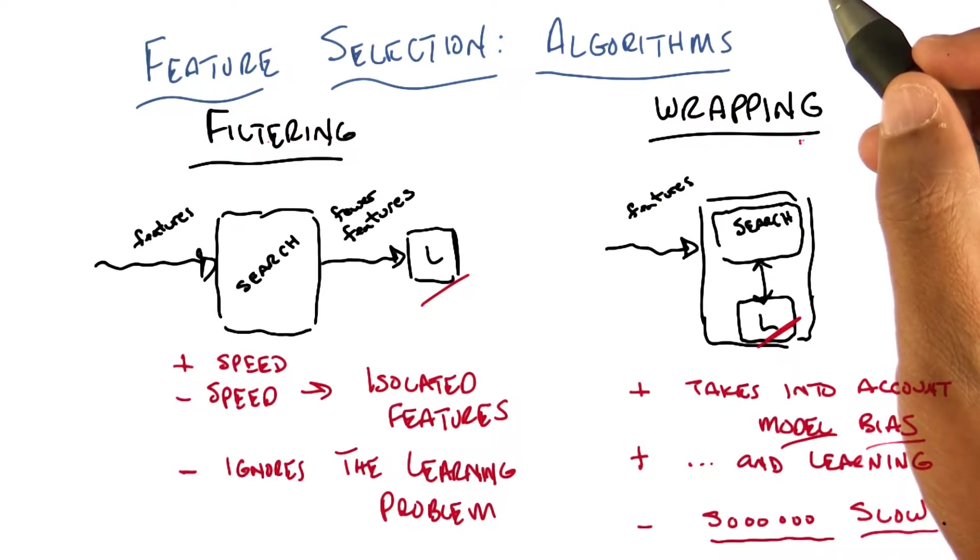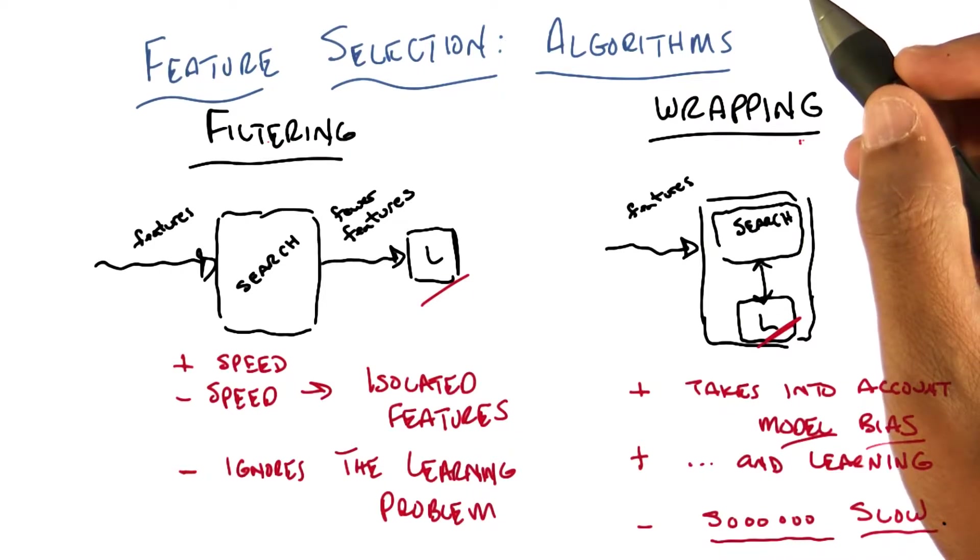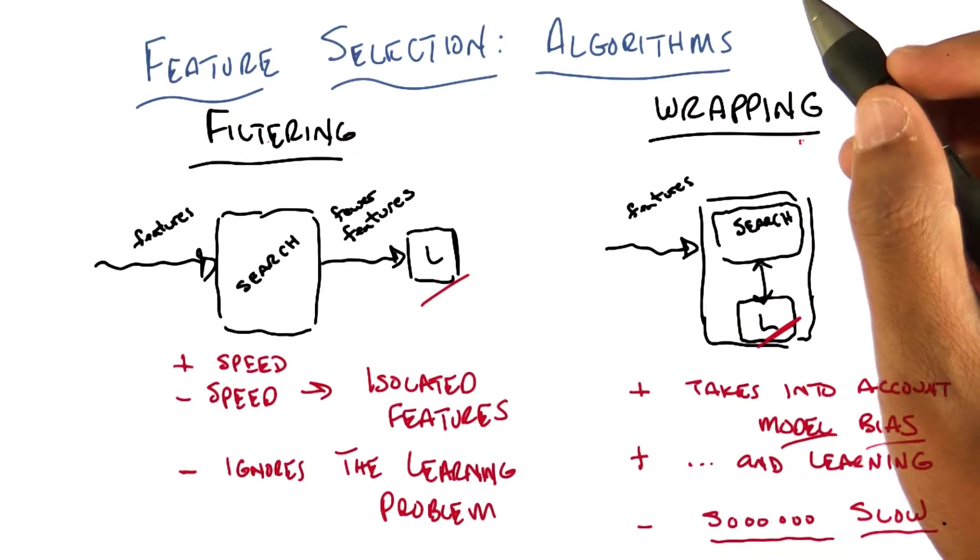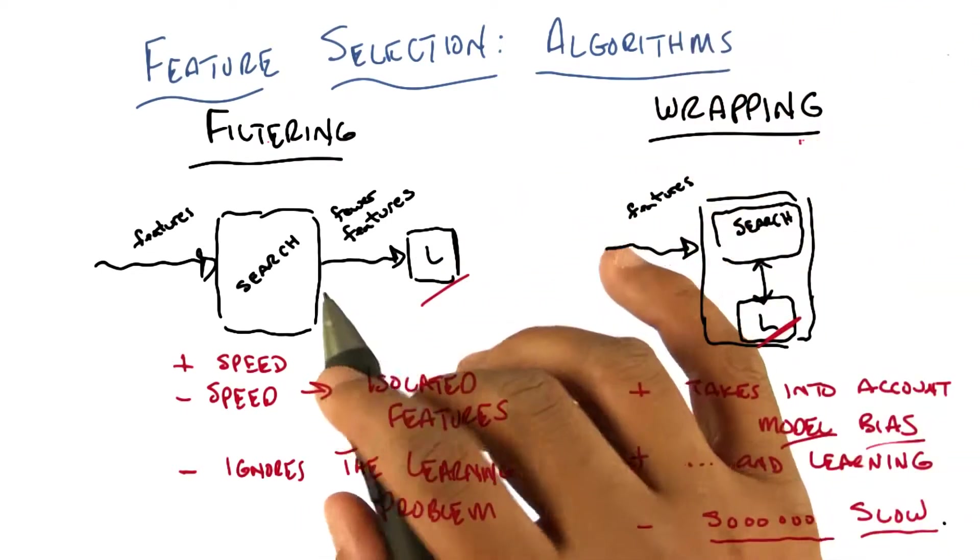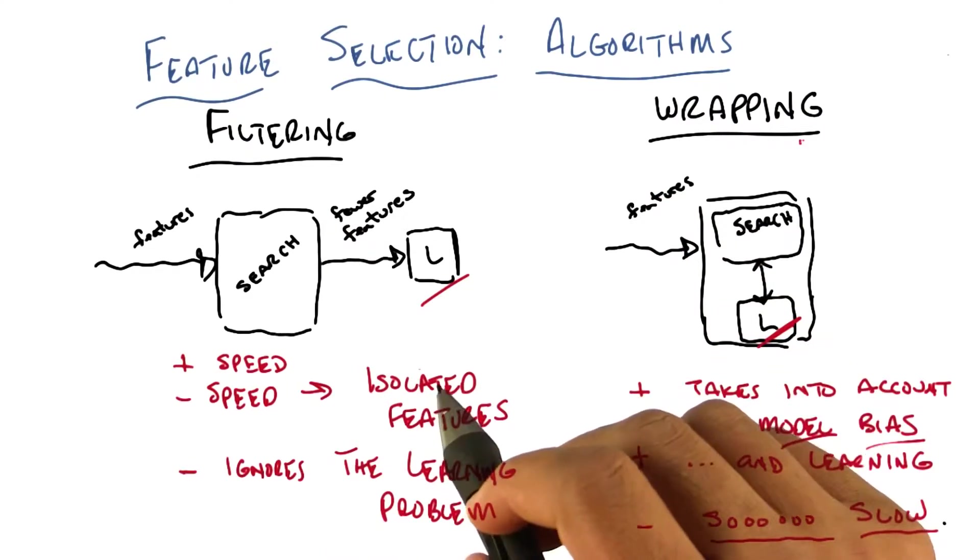I'm thinking of decision trees, maybe, and I think boosting kind of has a little bit of this depending on what the weak learner set is. Right, that's true. I mean, the problem with boosting is that it's not picking the features so much as it's picking examples. But certainly with decision trees you're exactly right. Decision trees are in its own way a kind of filtering algorithm.